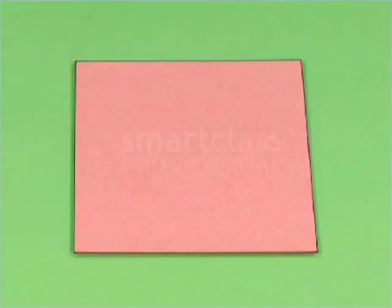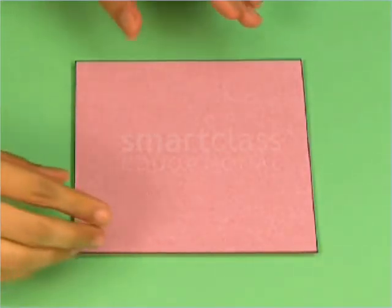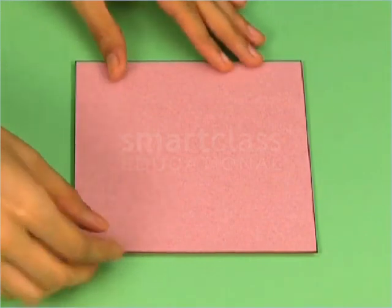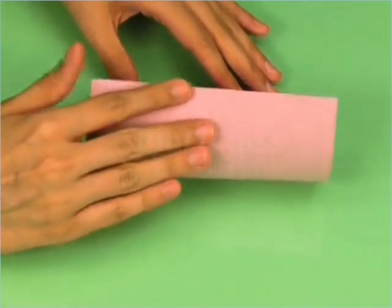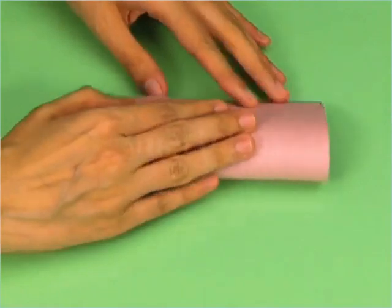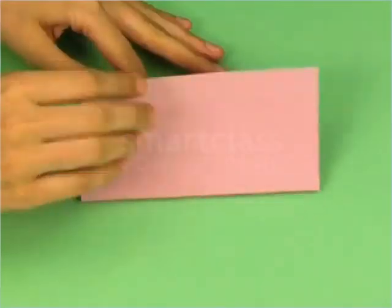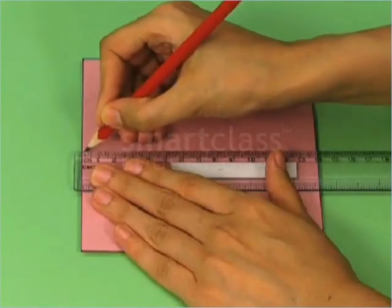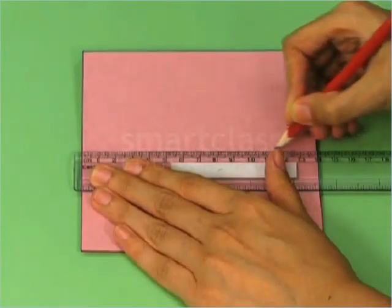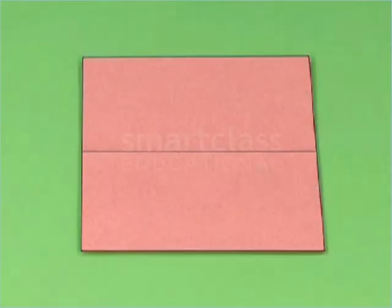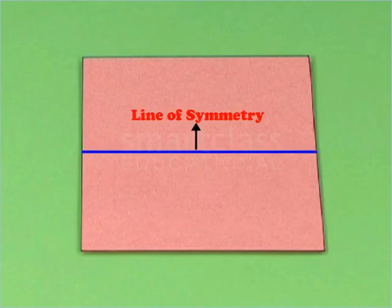Next, take the cutout of the square. Fold it so that one of the pairs of its opposite sides exactly overlap each other. Unfold the square to get a crease. Draw a line on the crease. This line of fold is the first line of symmetry of the square.